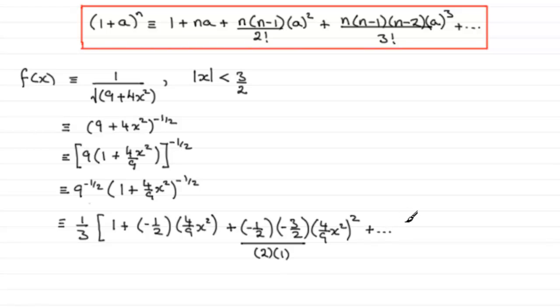So what we've got is 1/3 then multiplied by, and we just need to work out these three terms. Well, the first term is 1. As for this next term, it's going to be a negative term, and it's going to be minus, if you work it out, as 2x²/9.